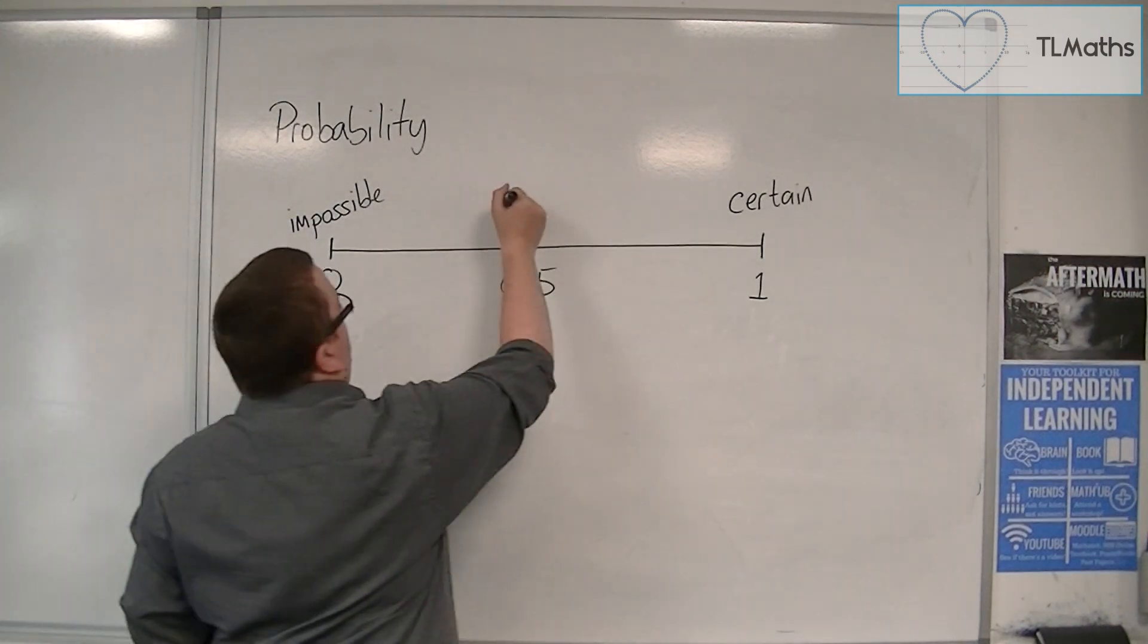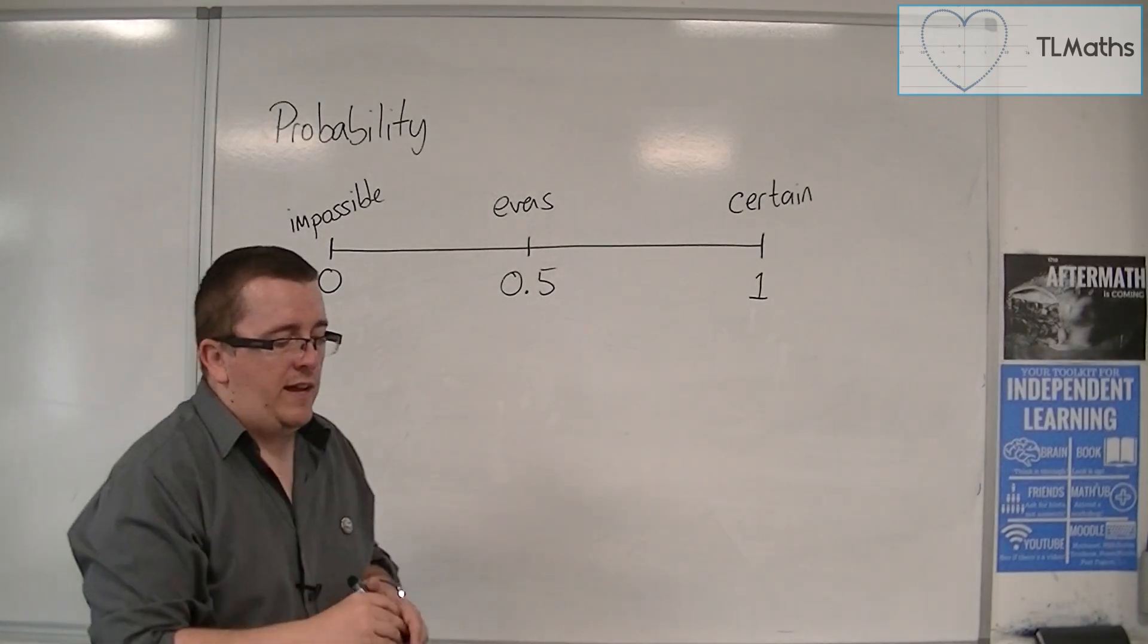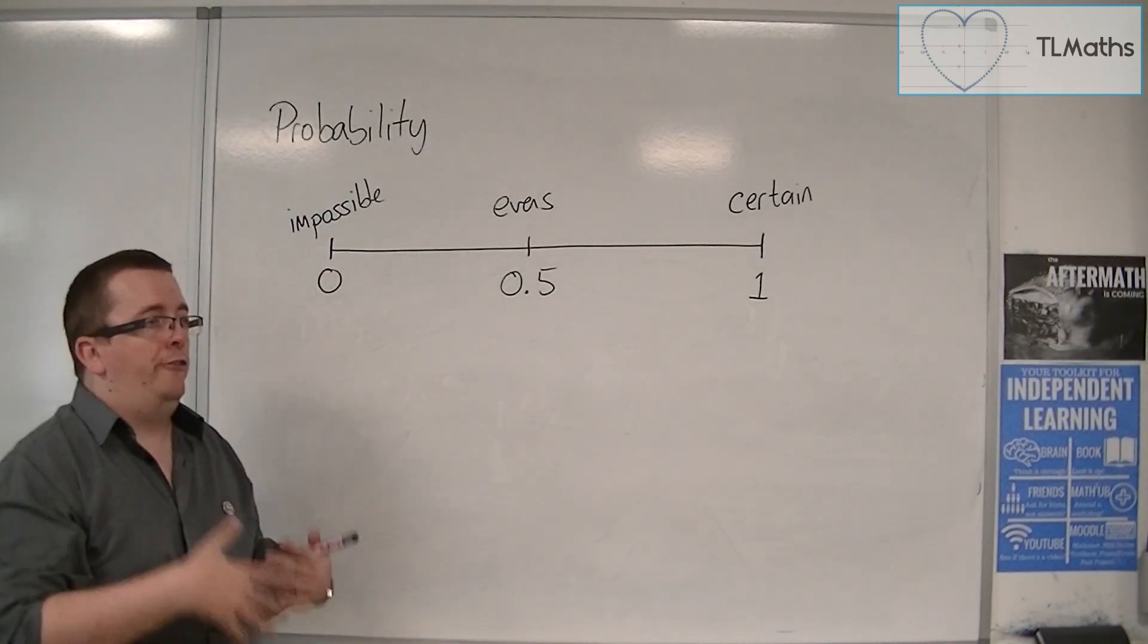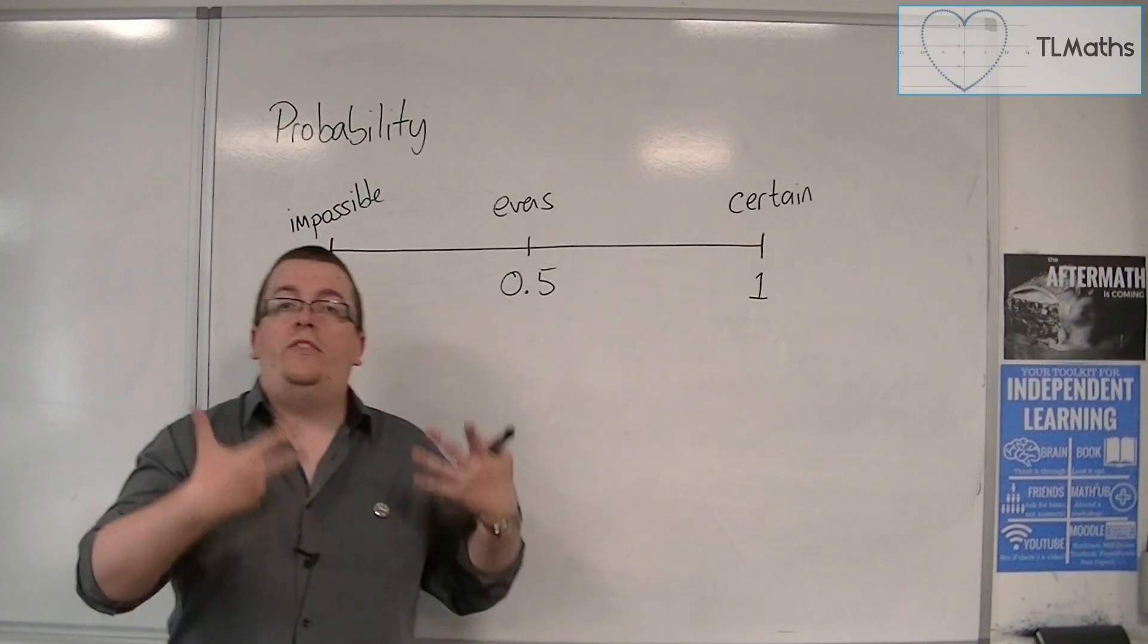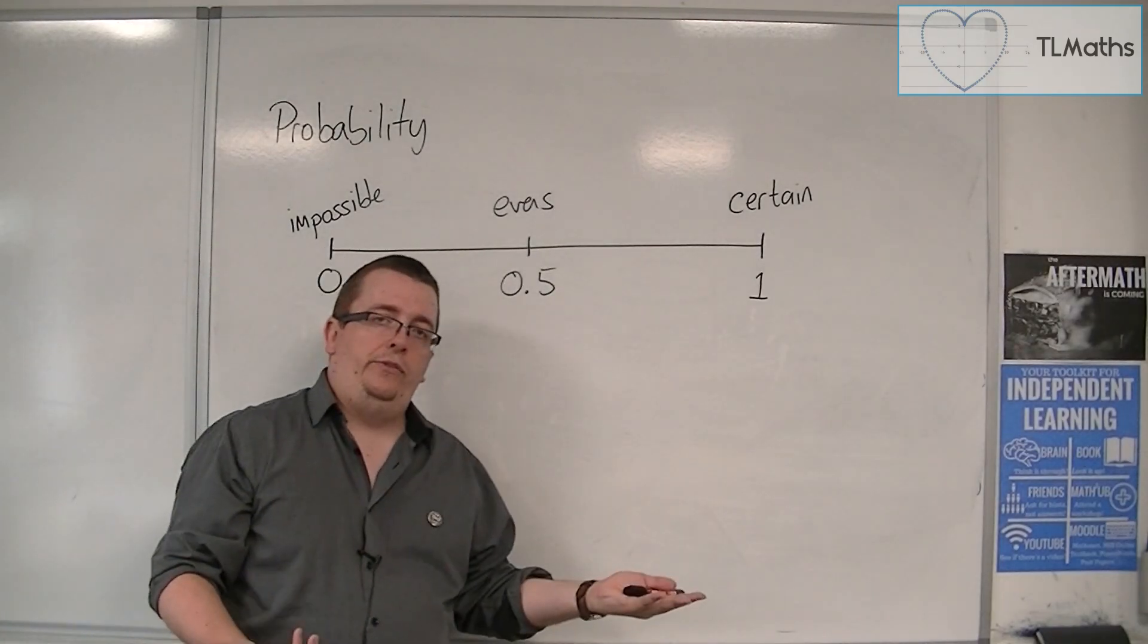And this is what we consider to be evens. So, in the majority of cases, when we're thinking of flipping a coin, we think of that as an even chance. Heads or tails.